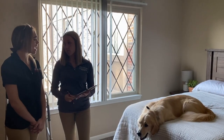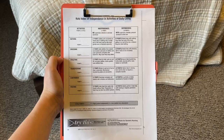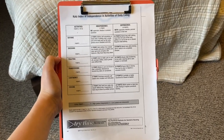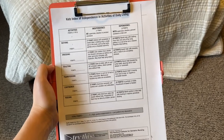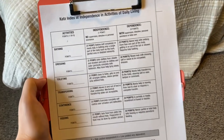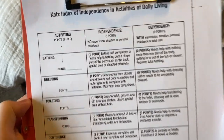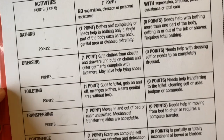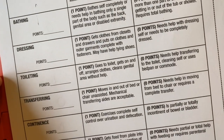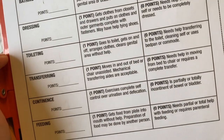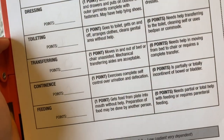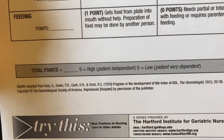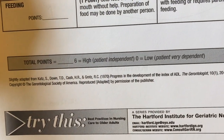So how is the Katz Index scored? If the client is independent while performing the activity, they will receive one point. If the client is dependent, they will receive zero points. A score of six indicates complete independence, four indicates moderate independence, and two or less indicates severe functional impairment.